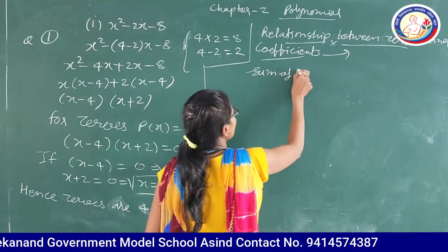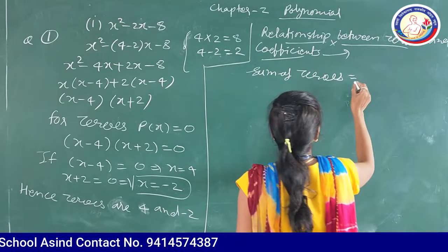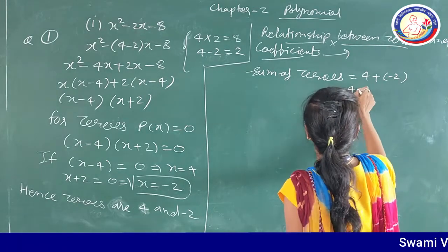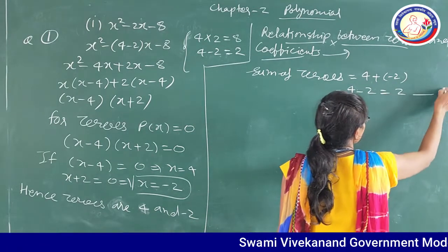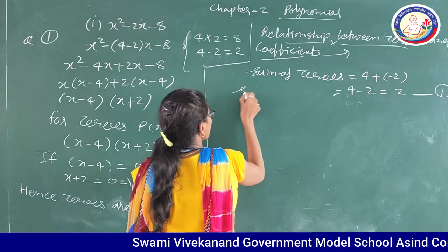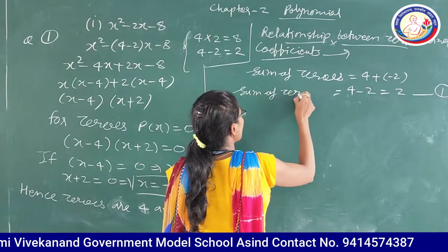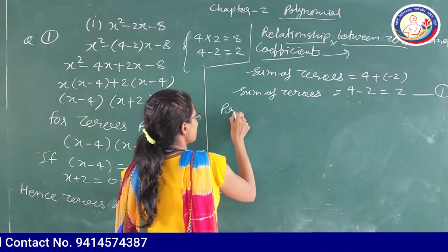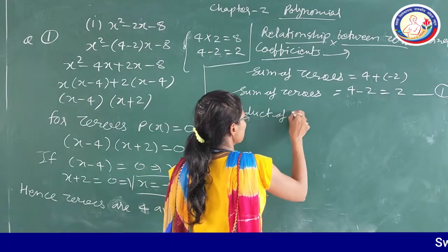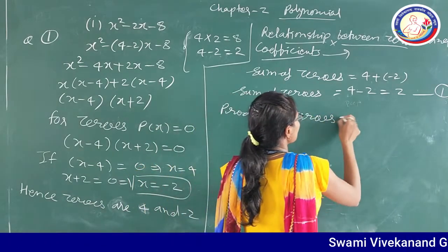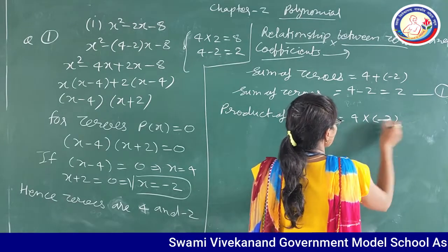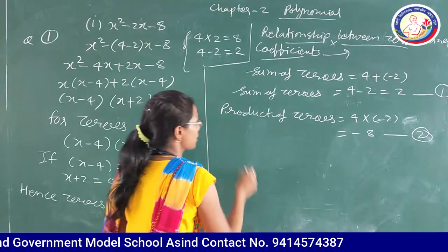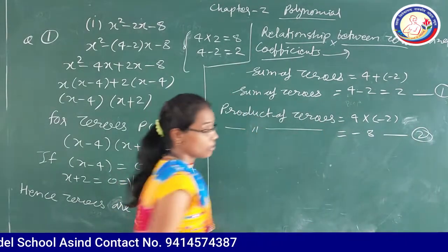Sum of zeros: the zeros are 4 and minus 2, so sum = 4 plus (minus 2) = 2. This is equation 1. Product of zeros: 4 into minus 2 equals minus 8. This is equation 2. These values were calculated directly from the zeros.